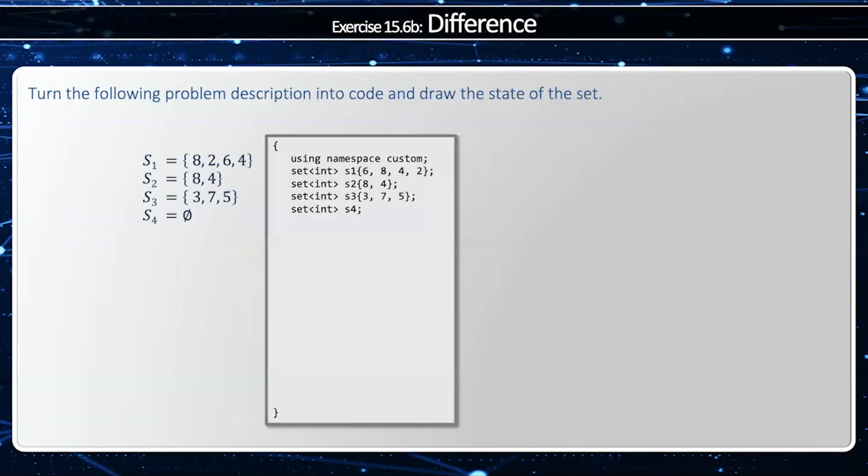All right, so we'll demonstrate that with the same initial four sets. And then we'll say S1 minus S2. So S1 has four elements, but I'm going to subtract 4 and 8 from that, and that will give me 2 and 6.